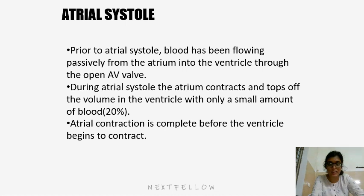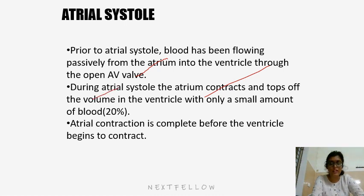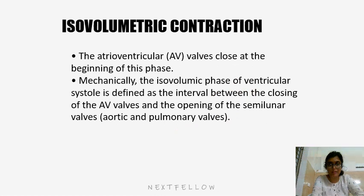Prior to atrial systole, blood has been flowing passively from the atrium to the ventricle through the open atrioventricular valve. During atrial systole, the atrium contracts and tops up the volume in the ventricle with only a small amount of blood — about 20%. Atrial contraction is complete before the ventricle begins to contract. During isovolumetric contraction, the AV valve closes at the beginning of this phase. Isovolumetric means the volume remains the same as the ventricle starts contracting.